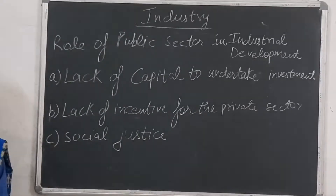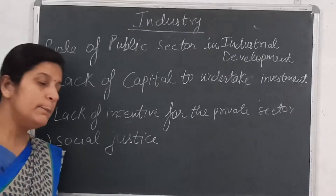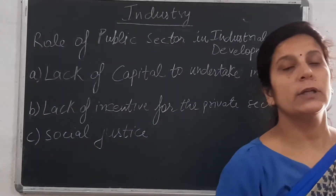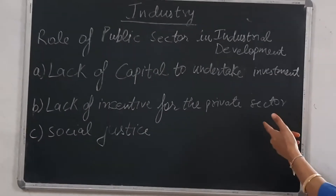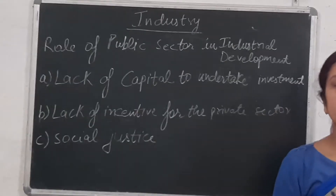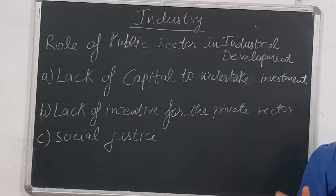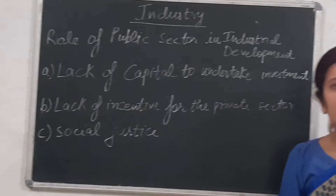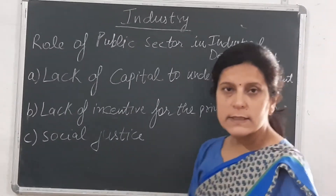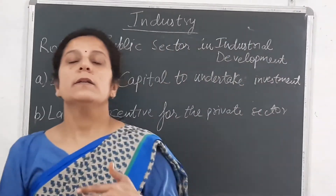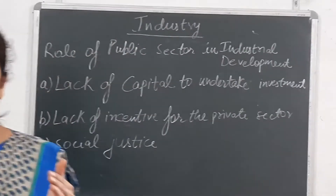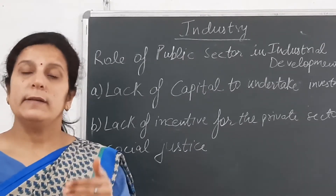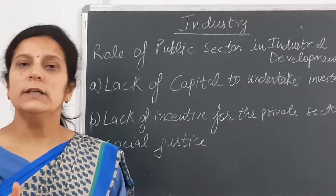The third reason is social justice, which means the benefits of prosperity should be enjoyed by all people — whether rich or poor. If development were left to the private sector, social justice would not be achieved, because the private sector would set up industries only in already developed areas — ignoring backward regions and remote areas. So the government took the lead role to bring India on the path of development through public sector industries.